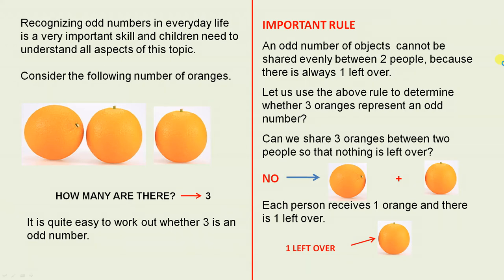Consider the following number of oranges. Let's count them: one, two, three. How many are there? Three, that's easy to see.